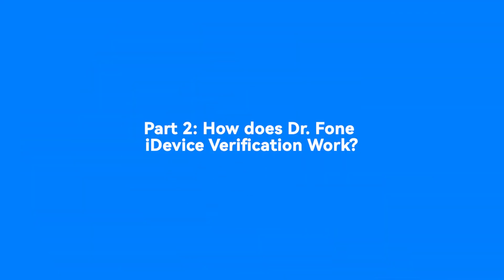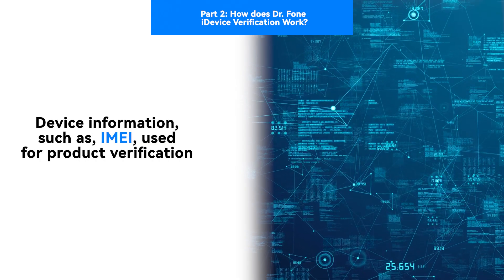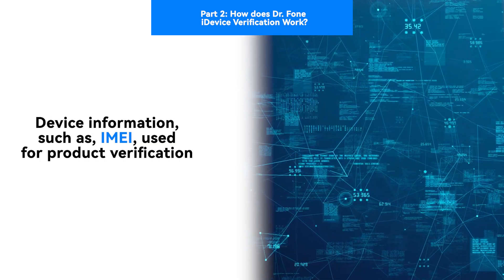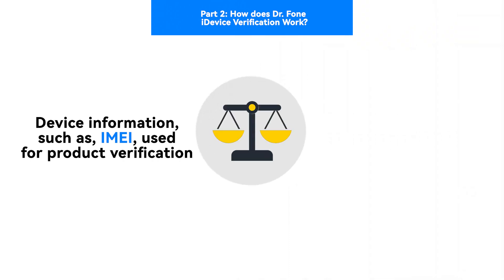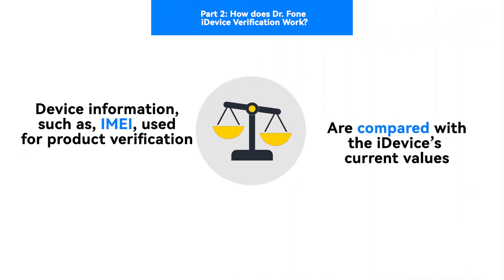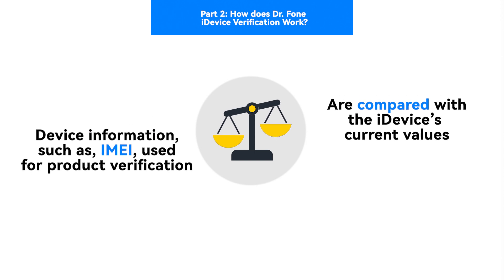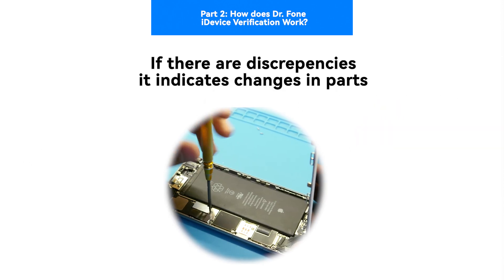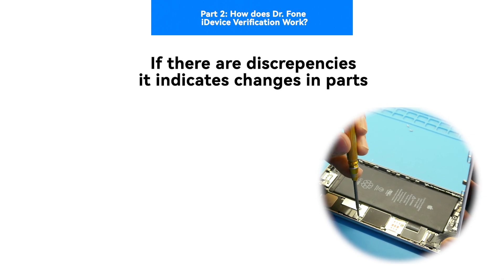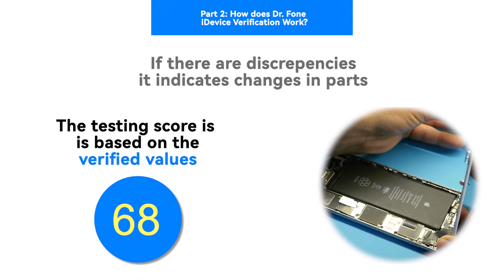Part 2: How Does Dr. Phone iDevice Verification Work? The device's information is stored using standardized numbers like the IMEI, which are used for Apple product verification by comparing them to the current values. If there are discrepancies, it indicates changes in the device's parts, and a testing score is provided based on the verified values.